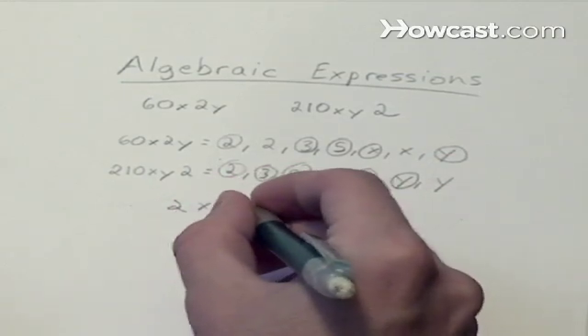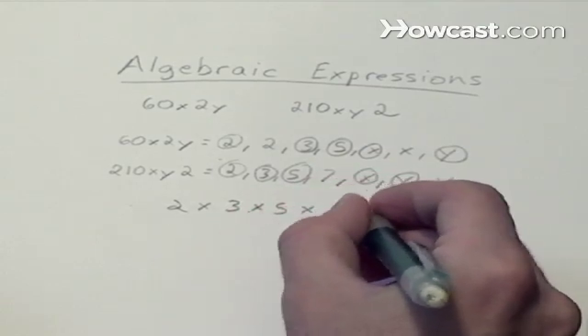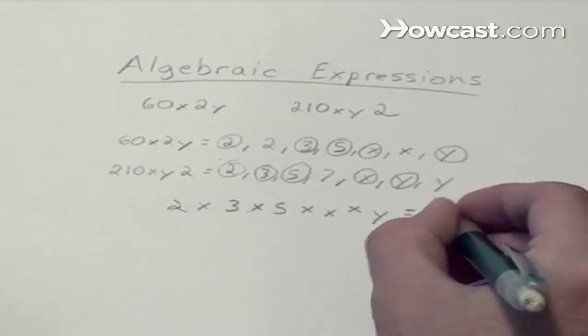The common factors in the second expression are 2, 3, 5, 7, x, y, and y. So the greatest common factor is 2 times 3 times 5 times x times y, or 30xy.